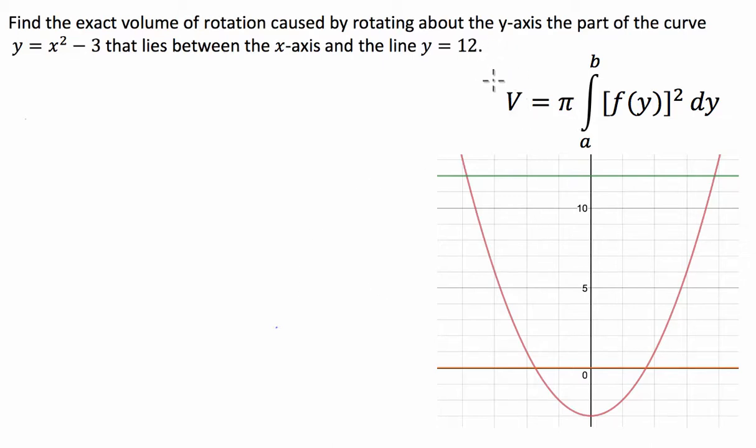Hey guys, we've got an applications of calculus question today, specifically integration. What we've been asked is to find the exact volume of rotation caused by rotating about the y-axis the part of the curve y equals x squared minus 3 that lies between the x-axis and the line y equals 12.